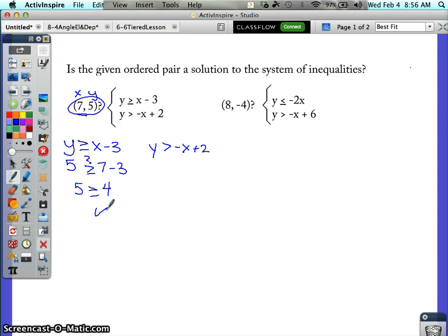Now for the next one: y is greater than negative x plus 2. 5 goes in for y, 7 goes in for x. Let's simplify. We are questioning this, is this true? Well, negative 7 plus 2 is negative 5. Is 5 greater than negative 5? Yes. So that's your work to support your answer.